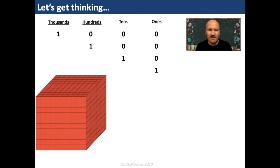Numbers are adjectives — they describe quantities. To give them meaning, we need to associate them with things. The number three on its own is pretty meaningless. If I said I have three, it doesn't really mean anything. But use it to describe things and we can make sense of it: I have three sweets, I have three children, I have three hours to get this lesson recorded, and so on.